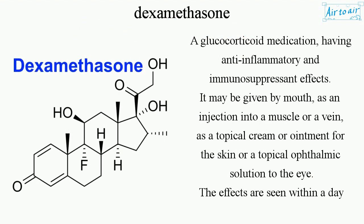Dexamethasone is a glucocorticoid medication having anti-inflammatory and immunosuppressant effects. It may be given by mouth, as an injection into a muscle or a vein, as a topical cream or ointment for the skin, or as a topical ophthalmic solution to the eye.